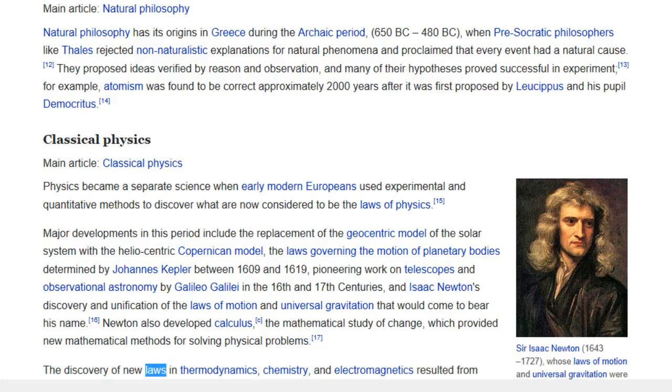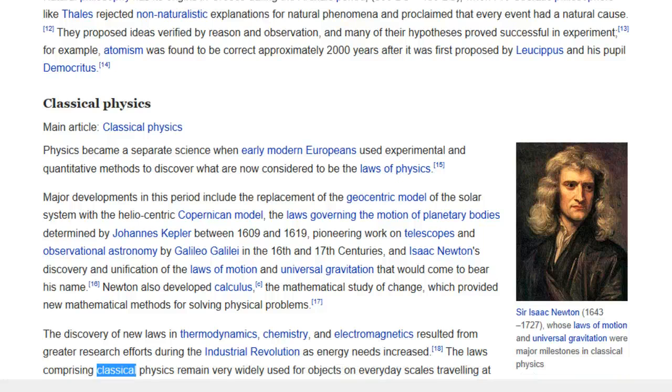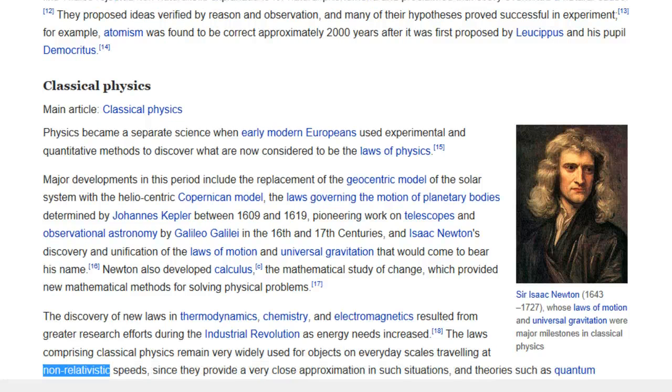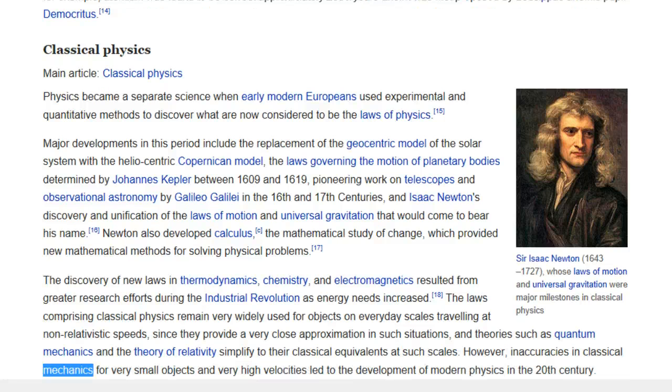The discovery of new laws in thermodynamics, chemistry and electromagnetics resulted from greater research efforts during the industrial revolution as energy needs increased. The laws comprising classical physics remain very widely used for objects on everyday scales traveling at non-relativistic speeds, since they provide a very close approximation in such situations, and theories such as quantum mechanics and the theory of relativity simplify to their classical equivalents at such scales. However, inaccuracies in classical mechanics for very small objects and very high velocities led to the development of modern physics in the 20th century.